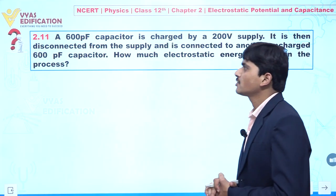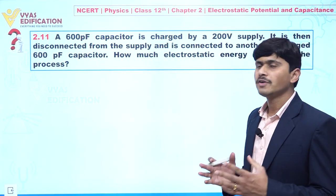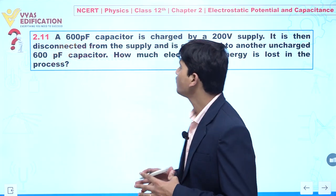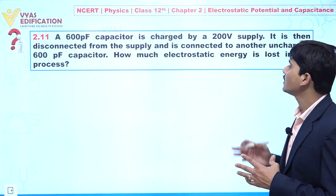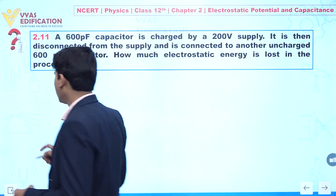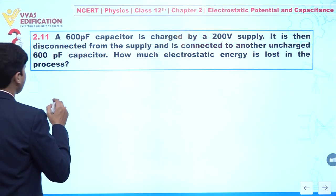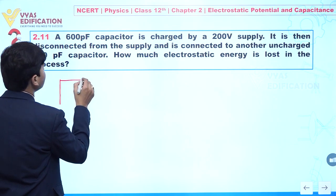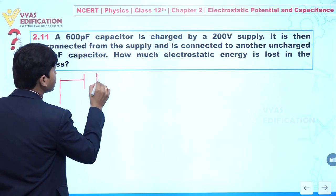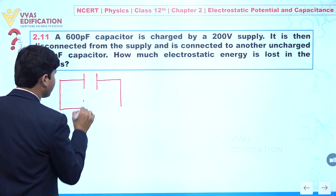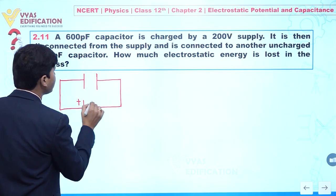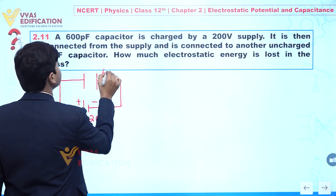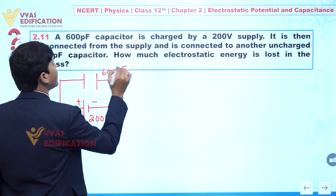Dear students, we are going to discuss question number 2.11. In this question, it is given that a 600 picofarad capacitor is charged by a 200 volt supply. Whenever you find such a question, first draw a circuit diagram. A capacitor is connected with a battery having a potential difference of 200 volt, and the capacitance is 600 picofarad.